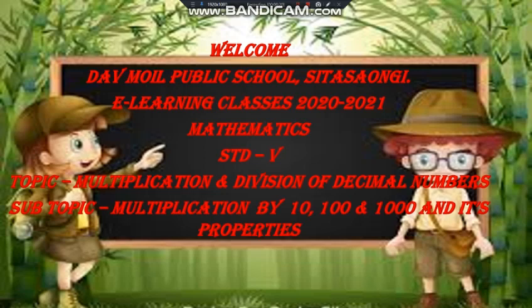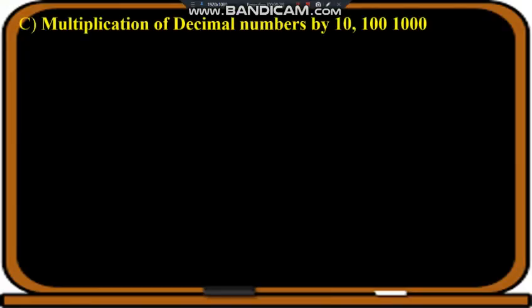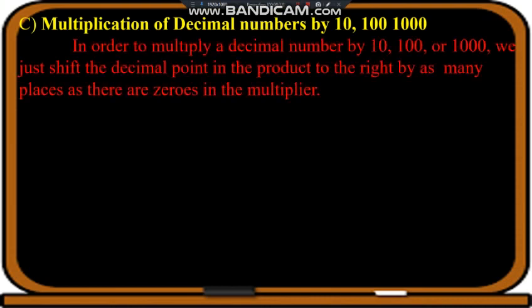In this, we will see multiplication of a decimal number by ten, hundred and thousand, and we will see its properties also. We know when we multiply a decimal number by ten, hundred or thousand, we have to place the decimal to the right by as many places as the number of zeros in the multiplier.